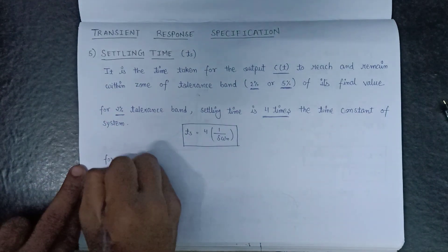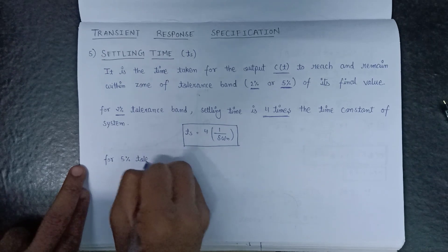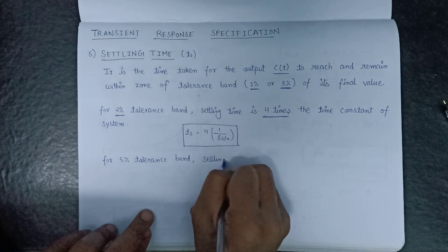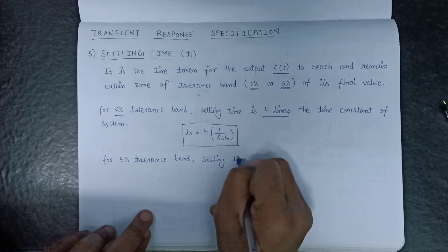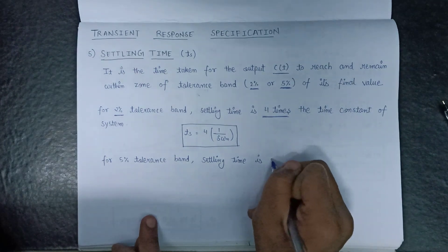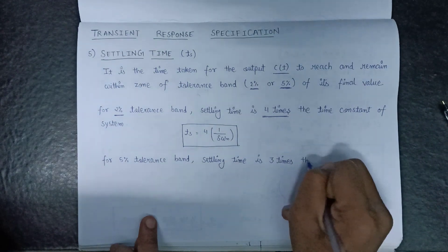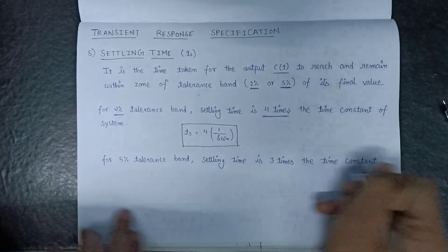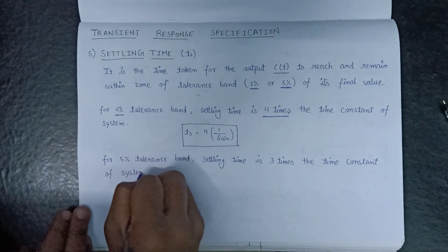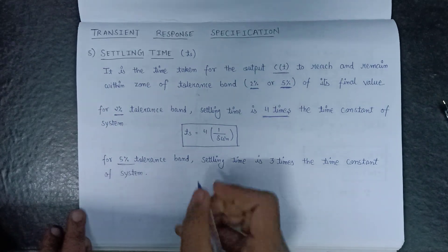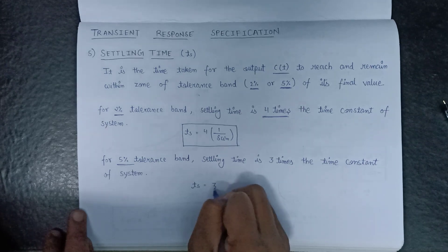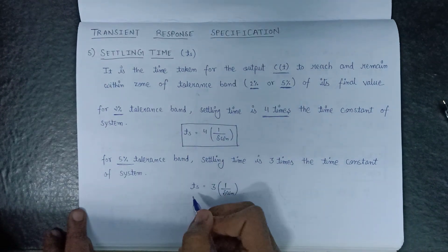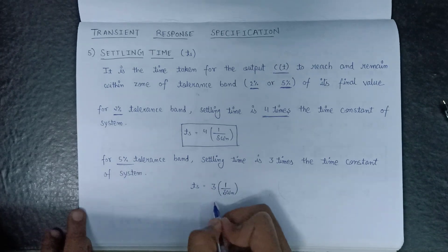For the 5% tolerance band, the settling time T of S is given as 3 times the time constant of the system, that is 3 times 1 over delta-omega-n, where 1 over delta-omega-n is the time constant of the system.